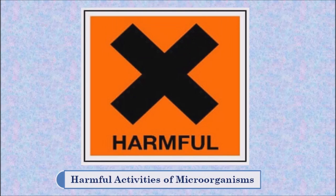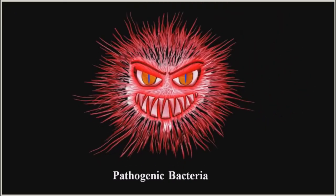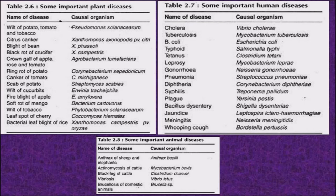So friends, let us start with the harmful activities of microorganisms. The pathogens cause great losses to plants and animal populations by causing several diseases. Some important plant and animal diseases, including those of human beings, are given in these tables.